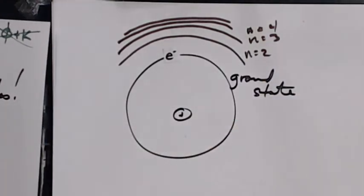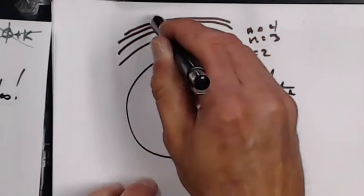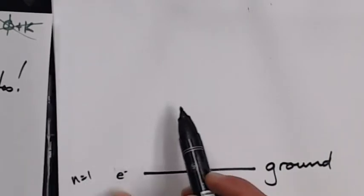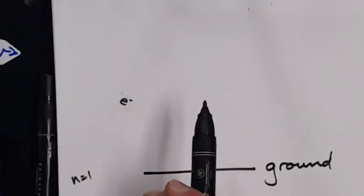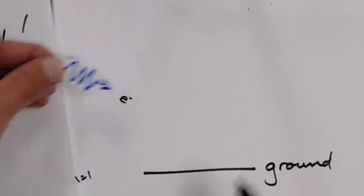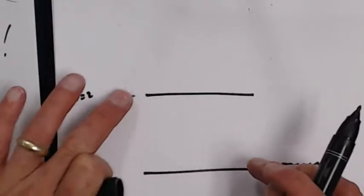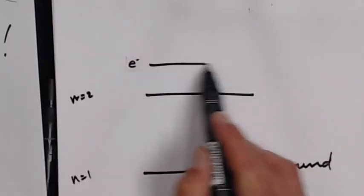Let me draw the part I'm really interested in. Here's my electron again at the ground state. Here is n equals one. We have to send in a photon. Here's n equals two, n equals three, and n equals four.